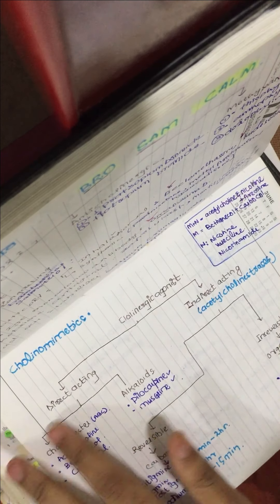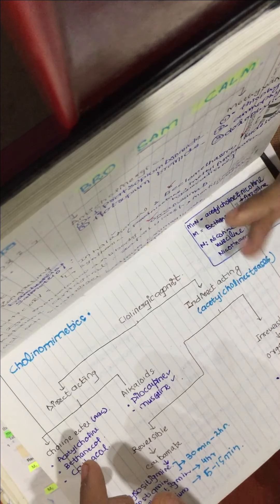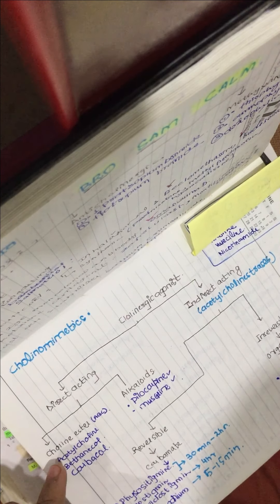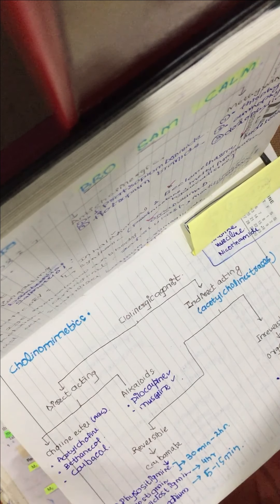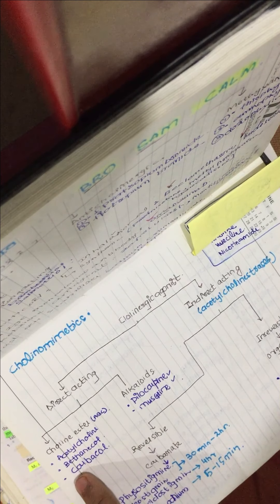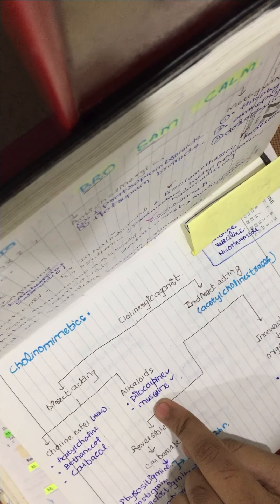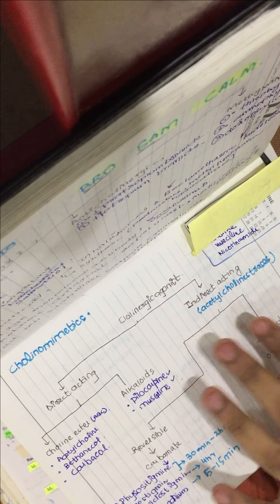Cholinomimetics are classified into two classes: direct acting and indirect acting. The direct acting drugs are choline esters and alkaloids. Choline esters include acetylcholine, bethanecol, and carbachol — remember the mnemonic ABC. Alkaloids include pilocarpine and muscarine.